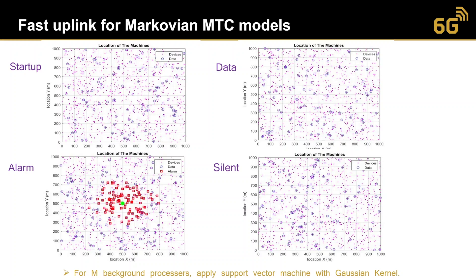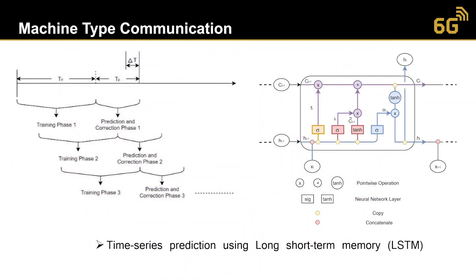We have four possible patterns of activation of the devices. In the beginning there is the startup pattern, and then the devices transmit data. When an alarm occurs at a certain position, the devices closer to that position are more likely to generate alarm data due to a certain event, for example a forest fire. When the alarm ends, these devices become silent. To capture the proximity of this alarm, we apply support vector machines with Gaussian kernels. We then perform time prediction for data alarm patterns and traffic prediction using recurrent neural networks and long short-term memory (LSTM), as shown in this figure.